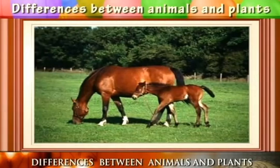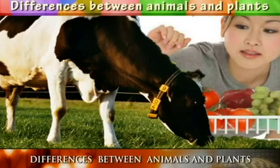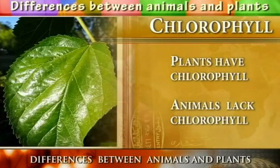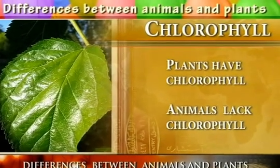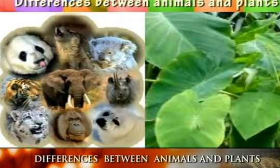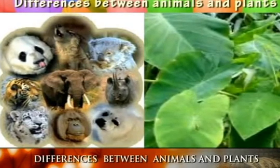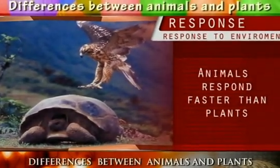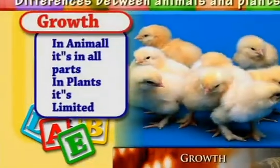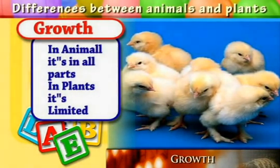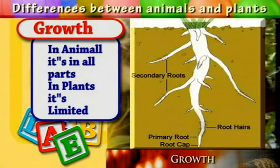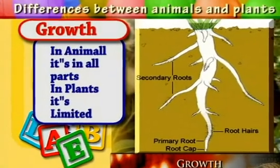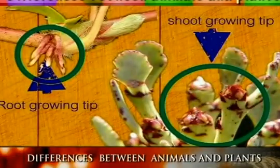Animals do not make their own food, therefore they do not have chloroplasts, whereas plants make their own food meaning that they have chloroplasts. When it comes to growth, animal growth is distributed to all parts of the body, whereas in plants it is limited to particular spots which are the roots and the stems.